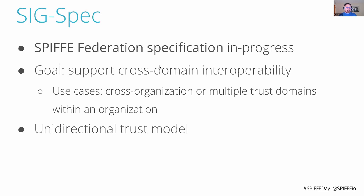Some example use cases: we have cross-organization federation, where one trust domain needs to federate or access workloads running in a completely different trust domain, such as an API provider. Federation also applies within the same organization — for example, having trust domains for a production set of workloads separate from the trust domain that operates on corporate machines or in a special IT trust domain.